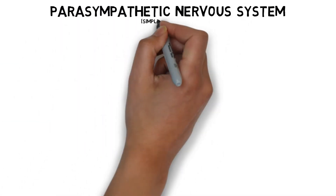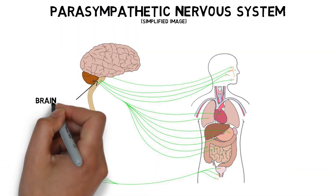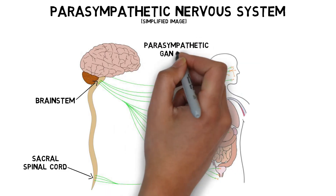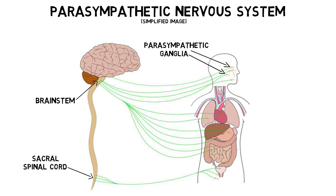The nerves that make up the parasympathetic nervous system originate in the brainstem and the sacral spinal cord. Like most other neurons of the autonomic nervous system, they do not travel directly from the brainstem or spinal cord to their targets, but instead extend first to clusters of neurons known as ganglia. The parasympathetic ganglia are typically found near or in the wall of the organs they supply.